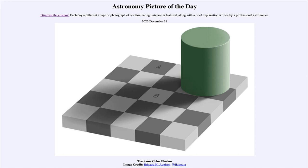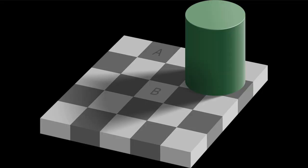So what do we see here? Let's go ahead and zoom in and take a look at our image. What we see is what looks like a checkerboard with alternating light and dark spaces. And in addition, we see a green cylinder sitting on it.